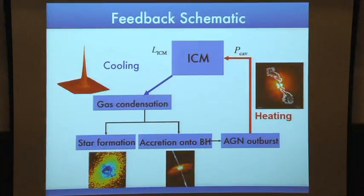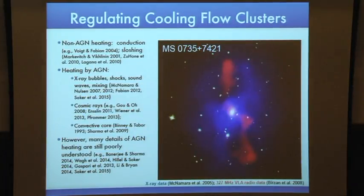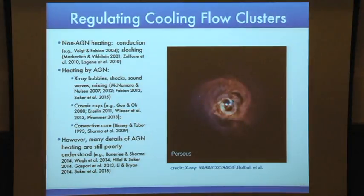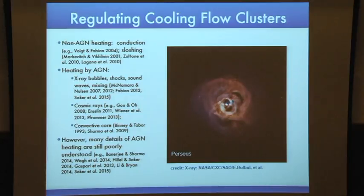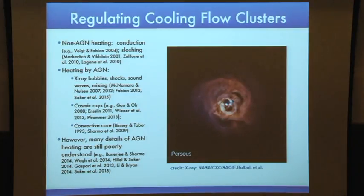In addition to the cavities, it's not so simple — there are also shocks, sound waves, and mixing. I'm showing one of the most famous systems, Perseus, with a very deep Chandra observation. You can see two sets of cavities and lots of structure — shocks, sound waves, et cetera. Besides X-ray shocks and cavities, there are cosmic rays, thought to be injected at the tip of the radio jets. When the jets move supersonically, some cosmic rays escape and hit the intracluster medium, creating a convective core which transports energy inside the cluster core.